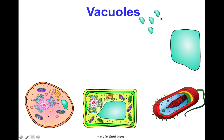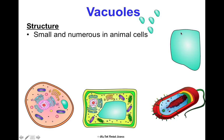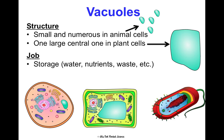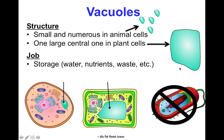Vacuoles can be small and numerous in animal cells, or there's just one large central one in plant cells. Their purpose is to store water, nutrients, waste, and other things. In animal cells we usually see a bunch of smaller ones, while in plant cells it's just one giant one that looks like a swimming pool. They are not found in prokaryotic cells.